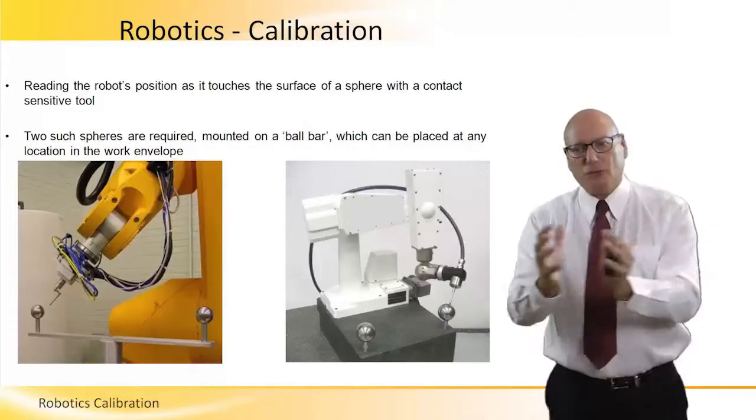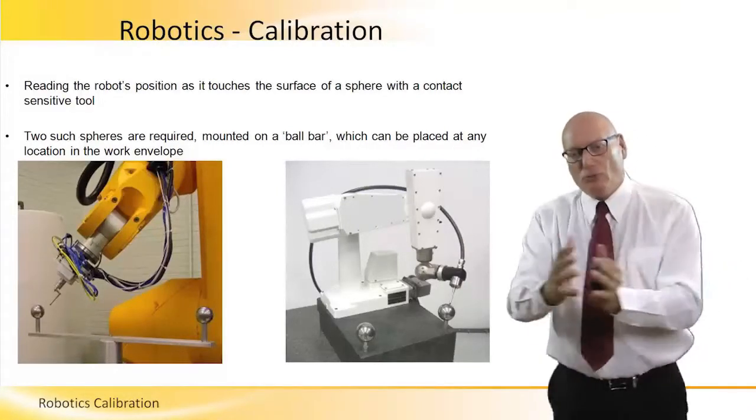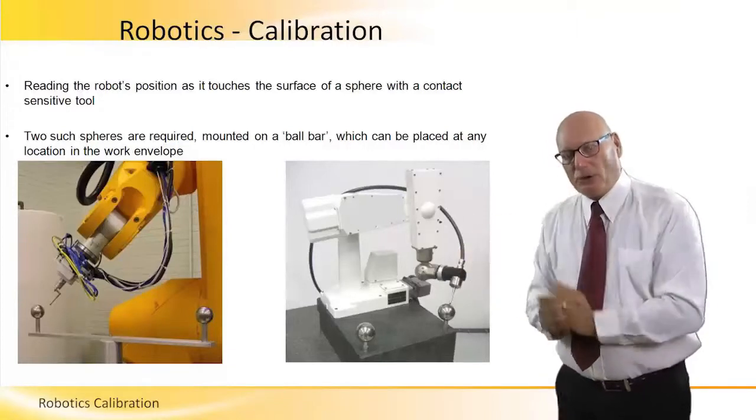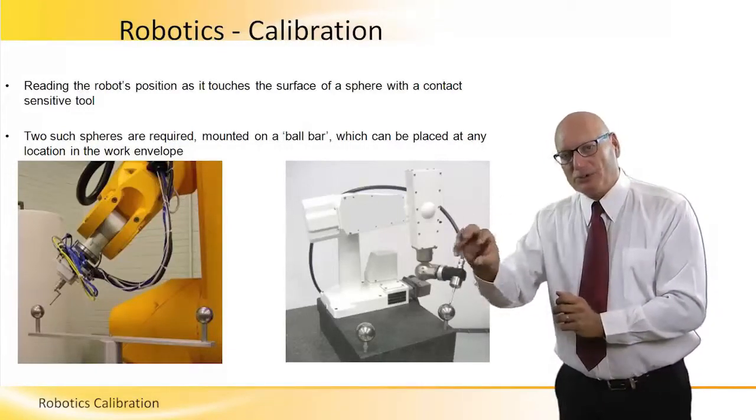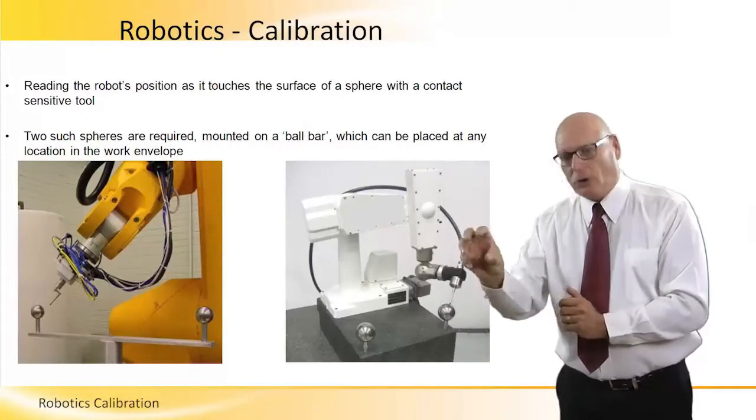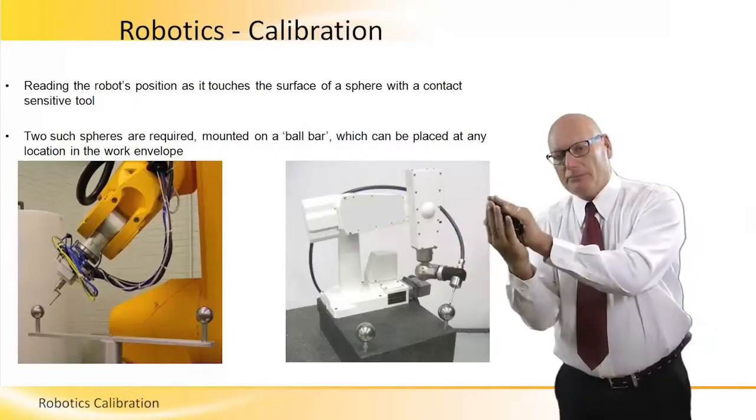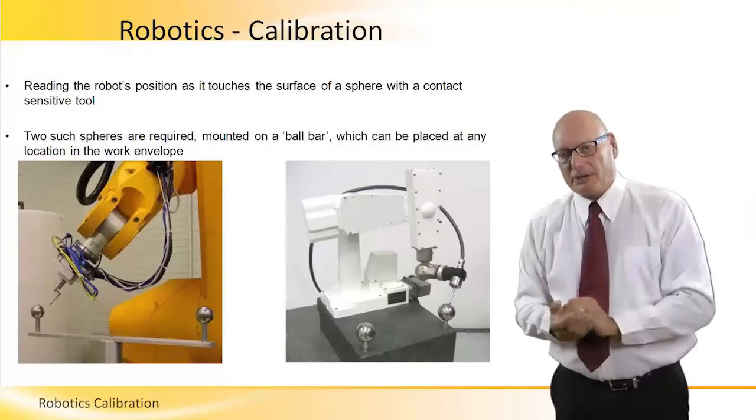To test the base motor, the robot moves to the second ball and repeats the same process, following the ball's path. Both nominal and actual data are compared.